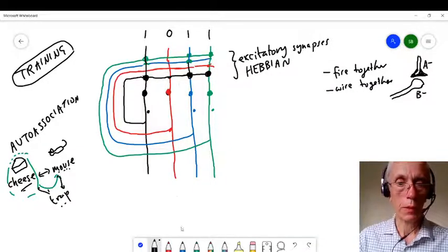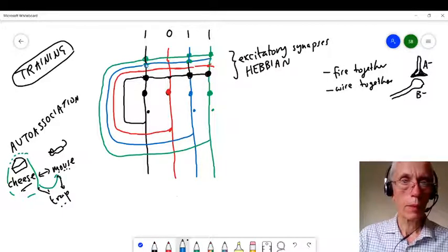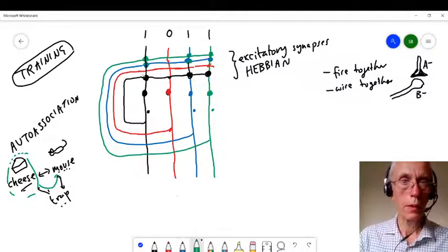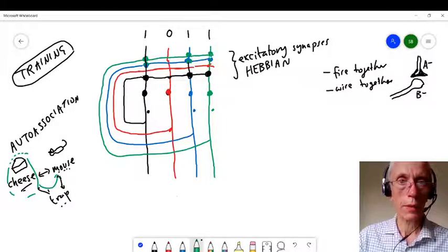Now let's look at the red ones. None of those, they're the blue ones. This one's going to be strengthened, this one's going to be strengthened, and this one's going to be strengthened. And if we do the green ones, this one's going to be strengthened, this one's going to be strengthened, and that one's going to be strengthened.